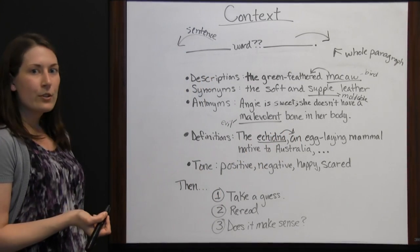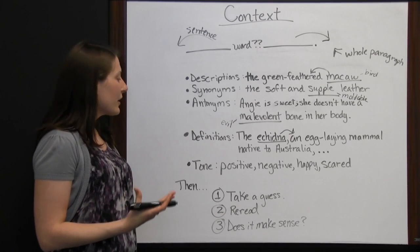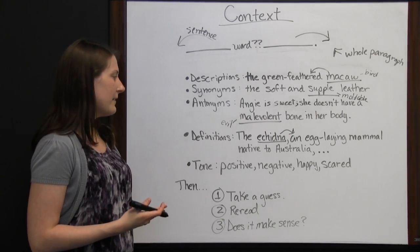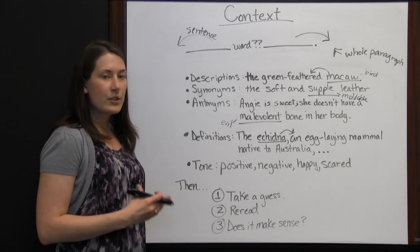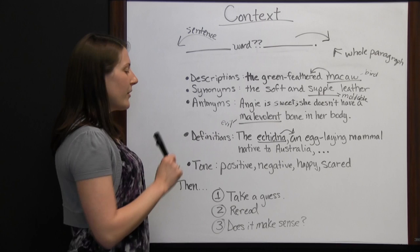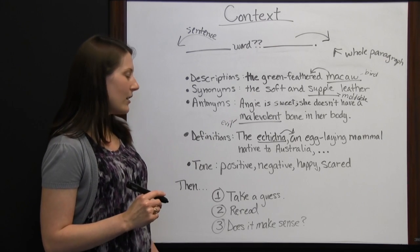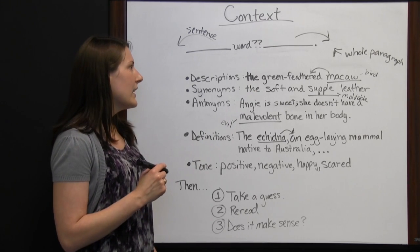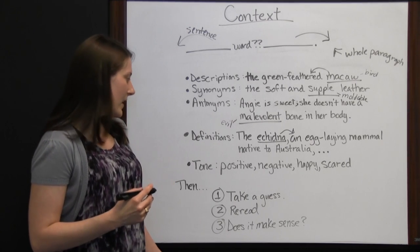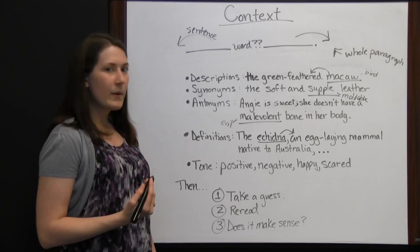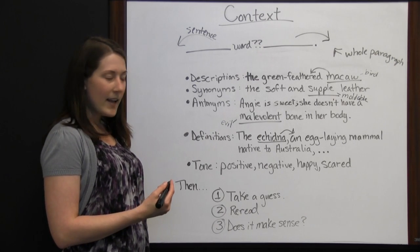The last clue you can look for is tone. Is the rest of this paragraph positive, negative, happy, scared? If you have a paragraph that's all one tone, then the word probably has something to do with that. If it's a scary tone, this may be a word that has to do with something scary. If it's positive, it may be a happy kind of word. You can always take that into consideration whenever you are taking your educated guess.